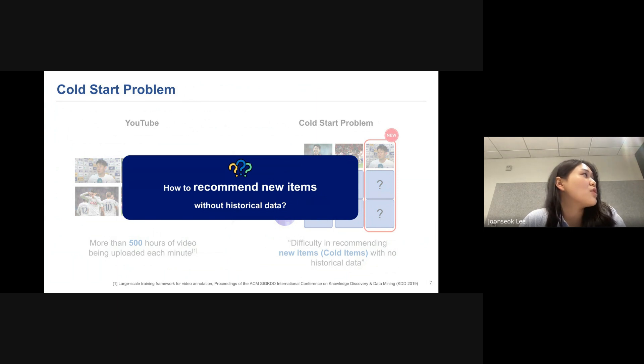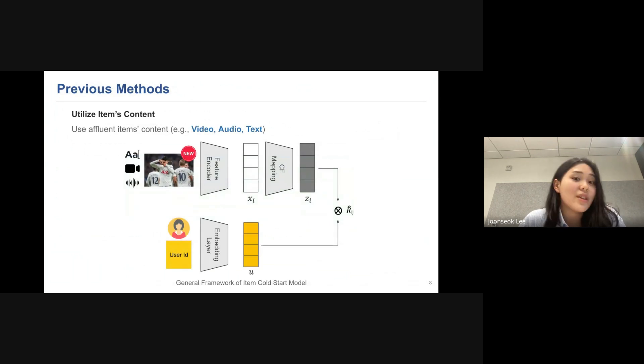Then how to recommend new items without historical data? By using items content. So content-based models use affluent item content, such as video, audio, or text to generate content features. Then diverse CF mapping methods have been proposed to transfer the content feature to recommendation suitable features. And using an inner product, we can produce the recommendation score. And I'll talk about the diverse CF mapping method in the next few slides.